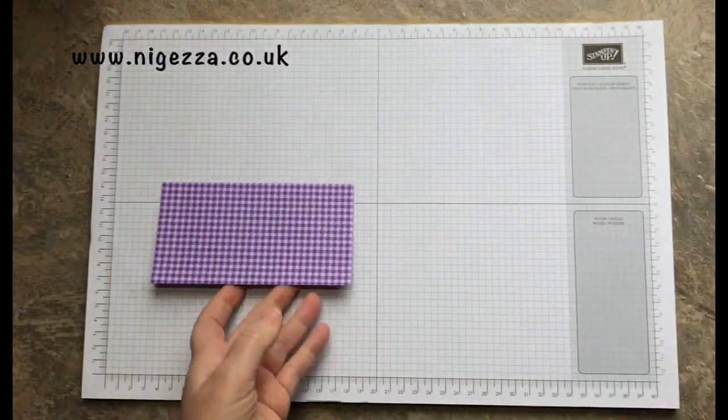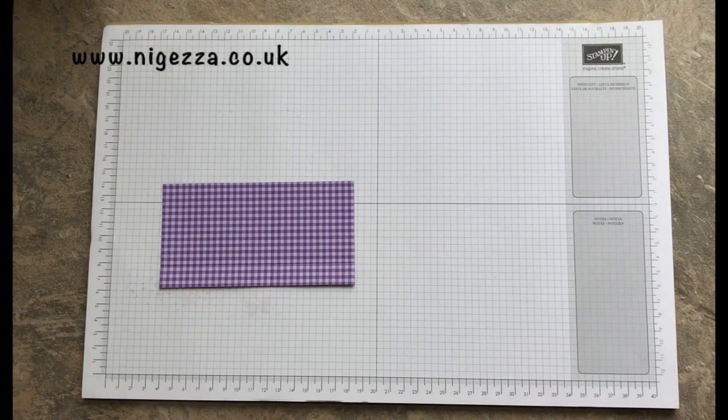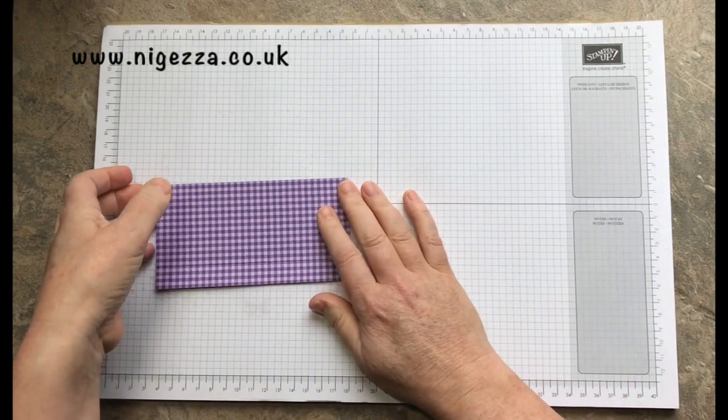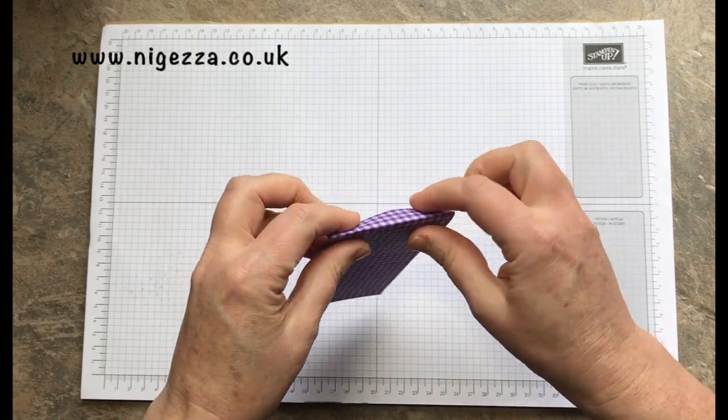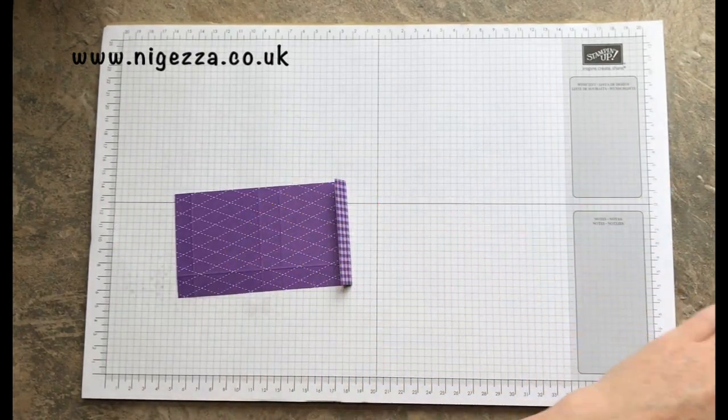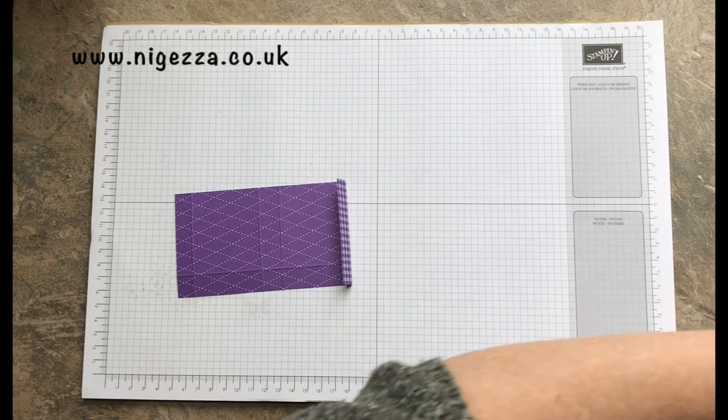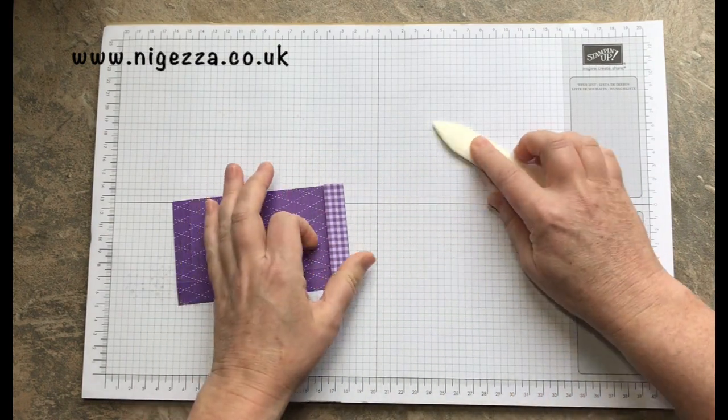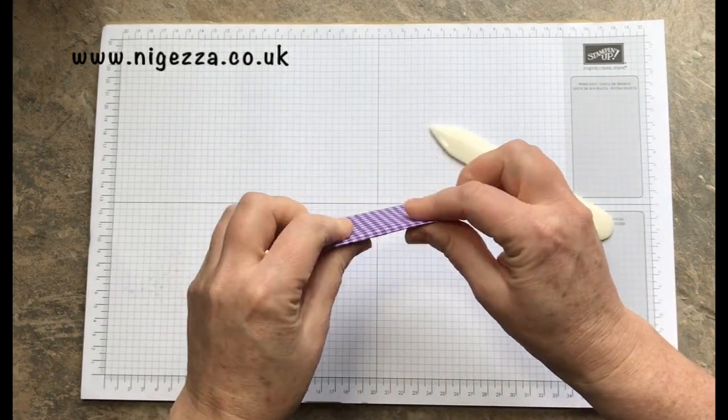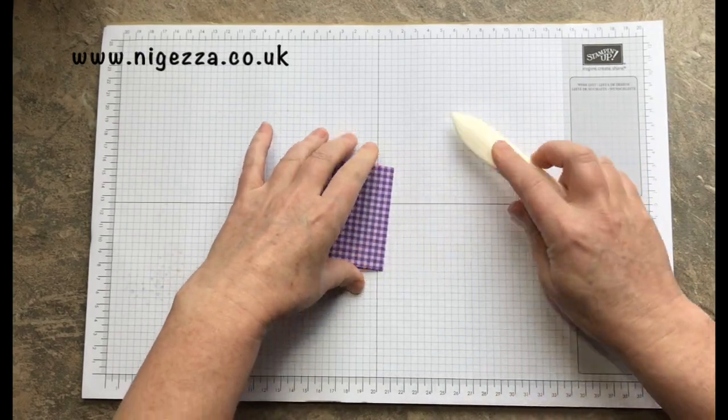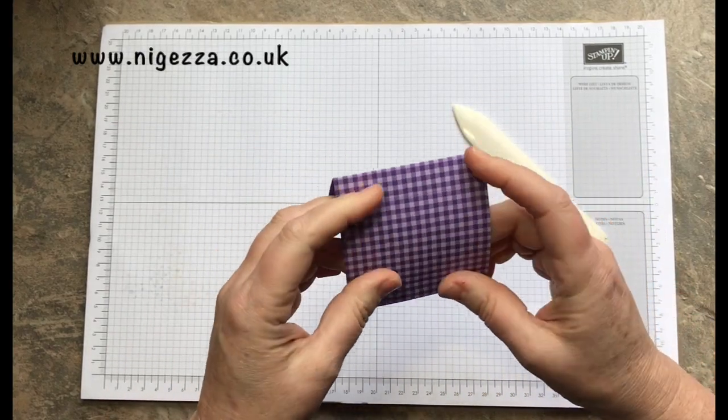Then we're just gonna score on that side at five eighths. That's all the scoring done. We'll put all these measurements on my blog nigezza.co.uk, and I have been putting them in imperial as well as metric.